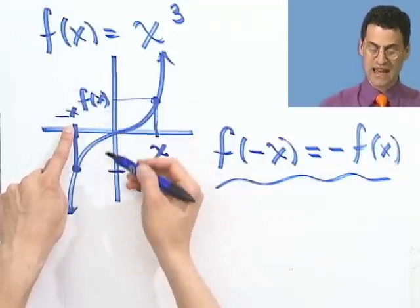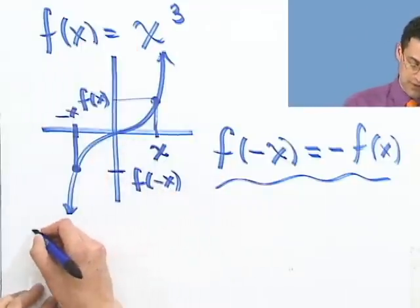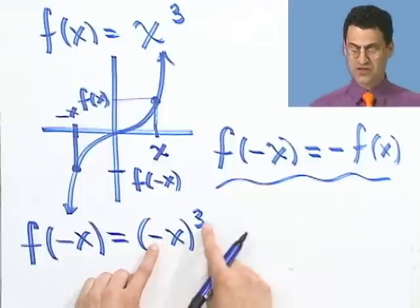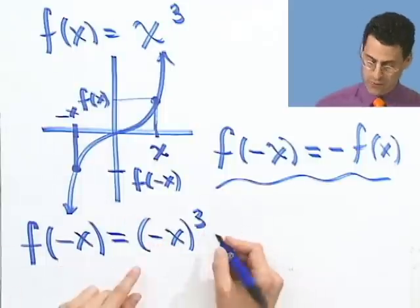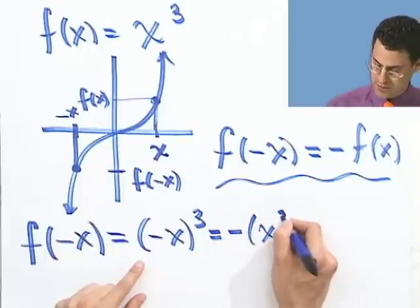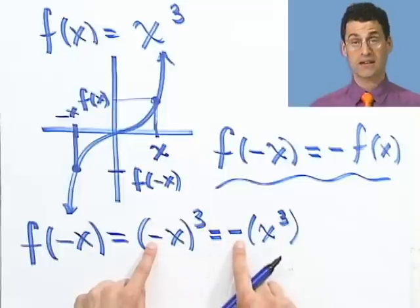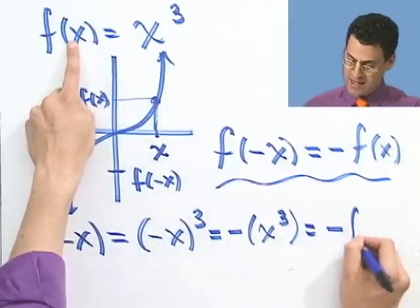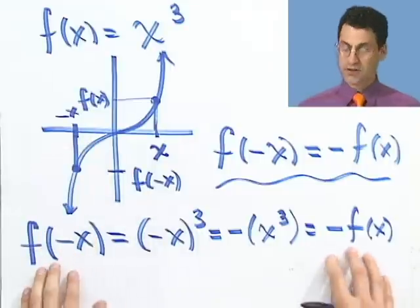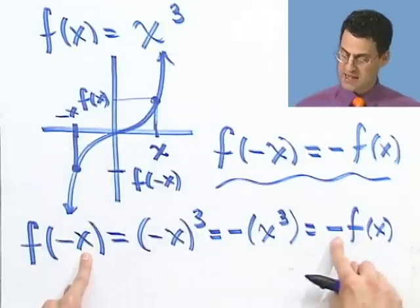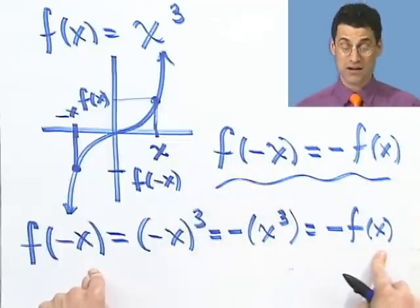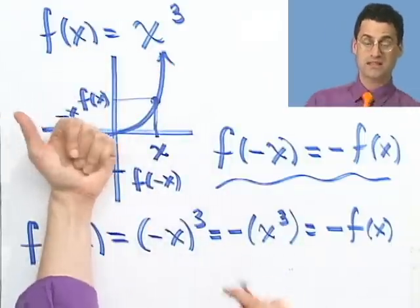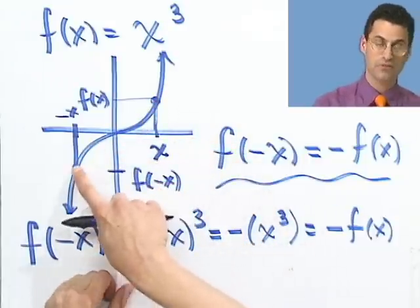Let's verify that f(x) = x³ is actually odd. Computing f(-x): plug in -x wherever I see x, giving (-x)³. Now (-1)³ = -1, so this equals -x³, which equals -f(x). That's exactly the criterion: f(-x) = -f(x). So this function is genuinely odd, meaning what it does on one side is not the same as the other side — you flip this way and then flip that way. It's symmetric with respect to the origin.